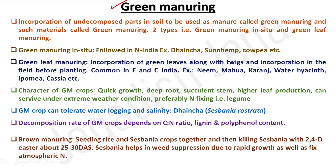Most leguminous plants have a low C:N ratio in their stem and residue, so their decomposition rate is faster. Their nitrogen content in the biomass is also higher. Therefore, we should preferably select a green manuring crop from the leguminous family so it decomposes faster and provides nutrients earlier.